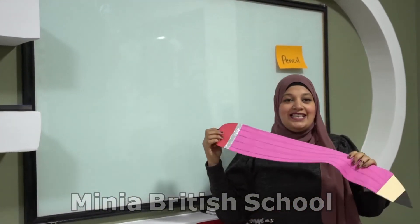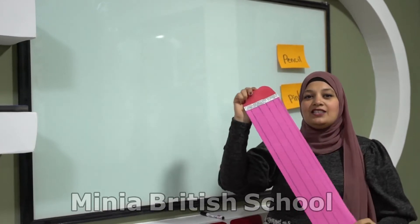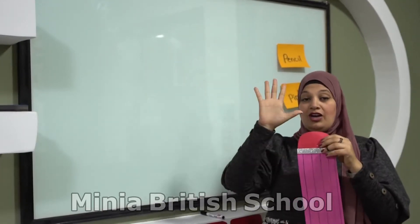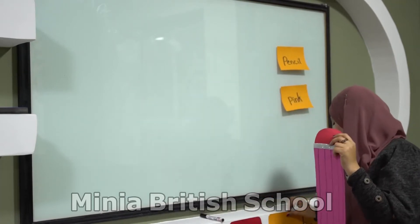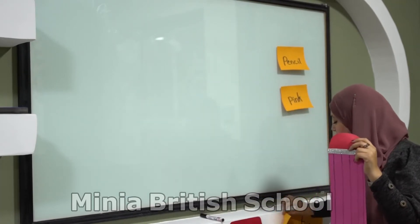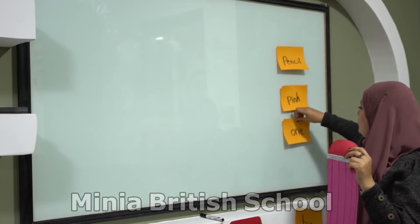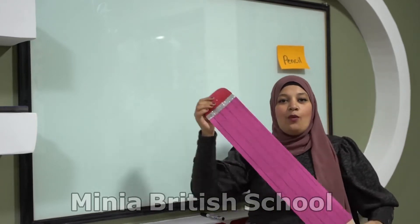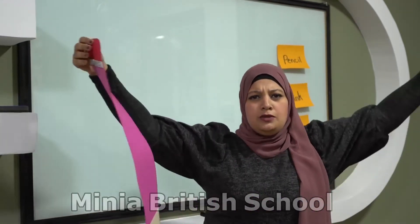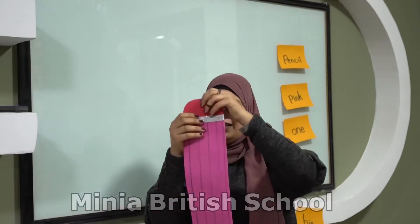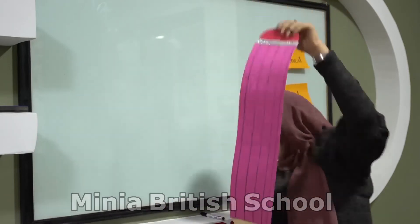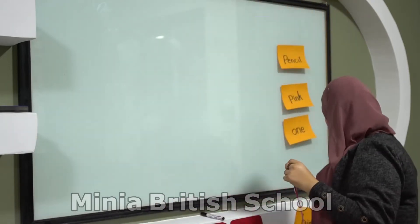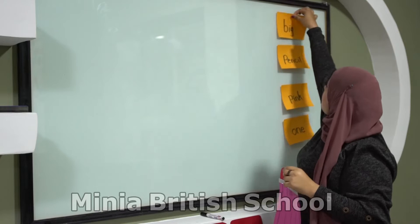Now let's see. How many pencils are there? Five pencils? No, it's one pencil. So I have here the word 'one.' Now, this pencil — is it big? Look, it's small. Let's see. Is it a big pencil? Look, it's a small pencil. Yes, it is big. Excellent. So I have here 'big.'